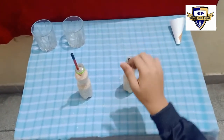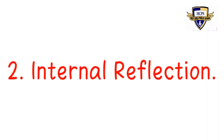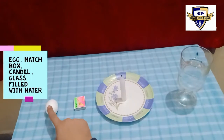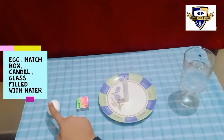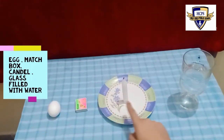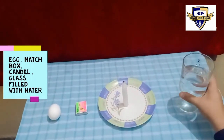Now let us perform a second activity on internal reflection. To perform this activity we need an egg, a matchbox, a candle, and a glass filled with water.